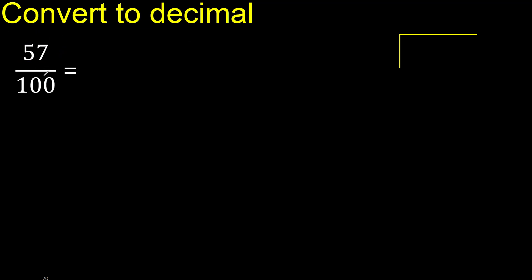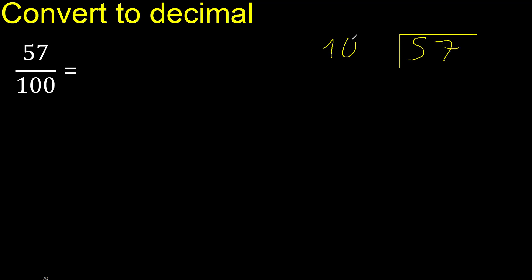57 divided by 100. Here, 57 is less, therefore complete — always complete with 0.